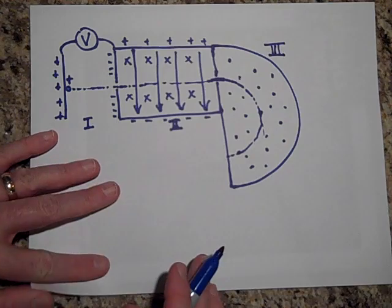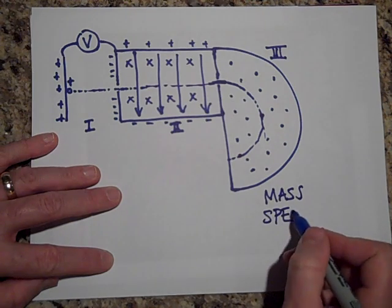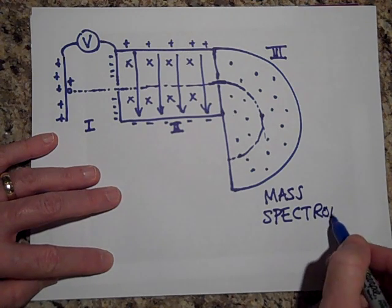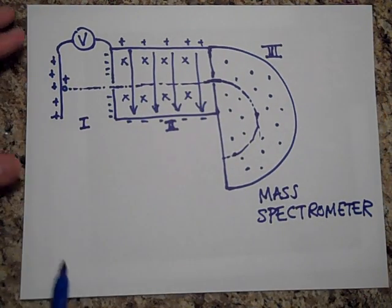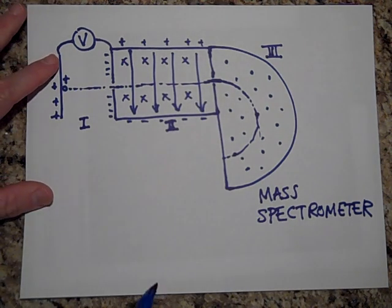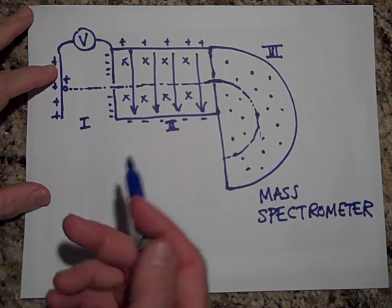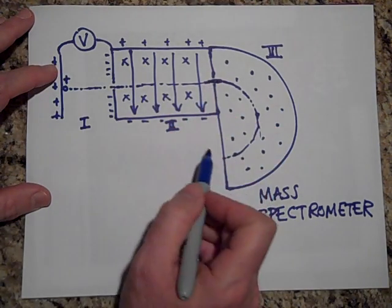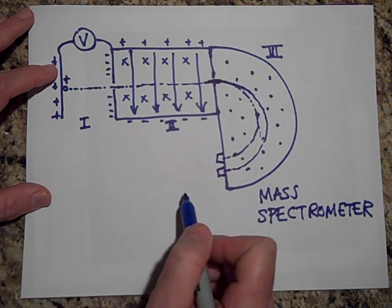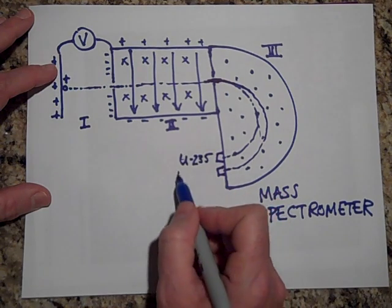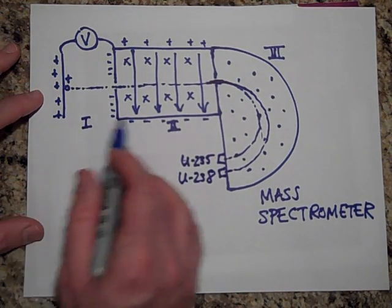This whole thing is called a Bainbridge mass spectrometer, or I'll just call it a mass spectrometer. What it's used for is to separate isotopes that have very similar masses. If you have two isotopes of say uranium-235 and 238, 238 has three more neutrons than 235 so it's actually slightly more massive. When it goes through here it will take a wider circle, a slightly wider circle. You can collect the 238 and the 235. This would be like uranium-235 and this would be uranium-238.